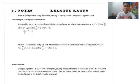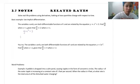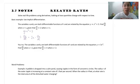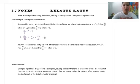We start by finding the derivative of y equals x squared plus 3. For y, the derivative is 1, but because it's a y variable we write it as dy/dt. Then x squared has derivative 2x, and because it's not a t variable, we multiply by dx/dt. The plus 3 at the end has derivative 0.